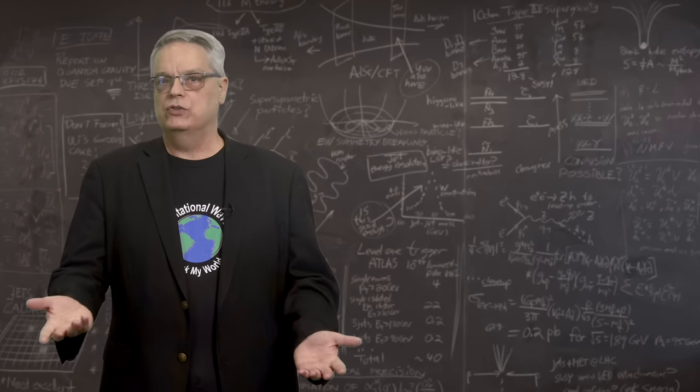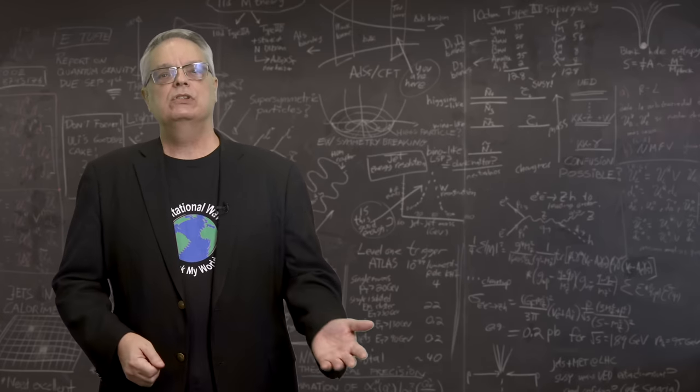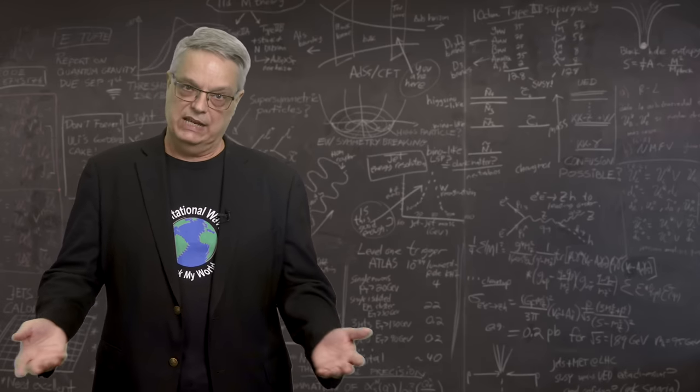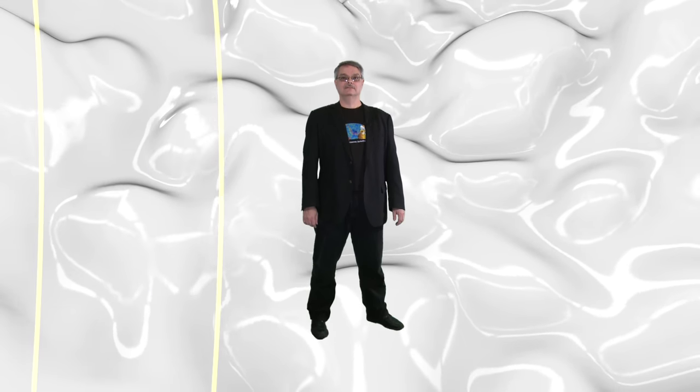So, how would you measure the speed of gravity? Well, first and foremost, you need to be able to detect gravitational waves, and that's hard. Gravitational waves distort the size of objects. For instance, if gravitational waves passed over you, they would change your height and width.